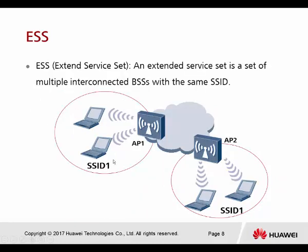The next is ESS — extended service set. This is an extended service set for multiple interconnected BSSs with the same SSID. When one AP covers its basic service area (BSA), users leaving that area lose connection. To extend coverage to another area, you deploy another AP with the same SSID configuration. You need to make sure both APs use the same ESS so that when a PC roams to another AP, it knows it's still connected to the same SSID.